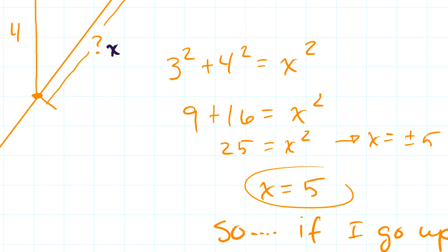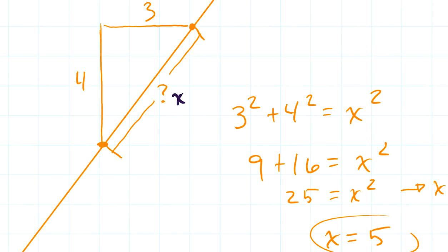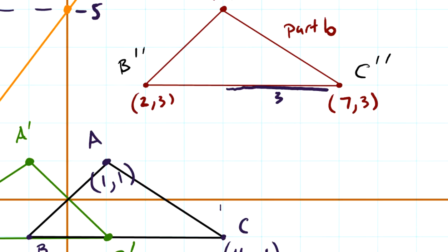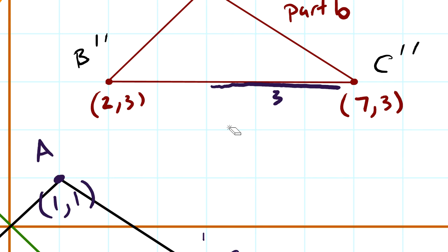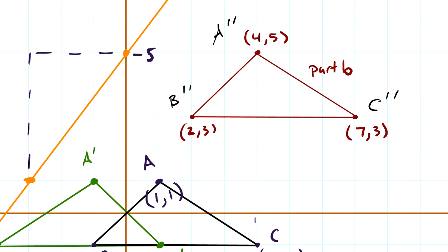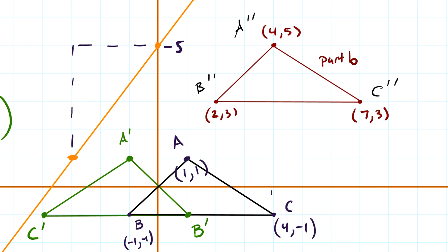So if I just follow that pattern — go up 4 over 3 — it will be parallel to the original shape but also ensure I'm moving it 5 units along that line. I took every single point and moved it up 4 units and over 3 units, and I ended up getting this new shape right here that was 5 units scooted along parallel to that line.